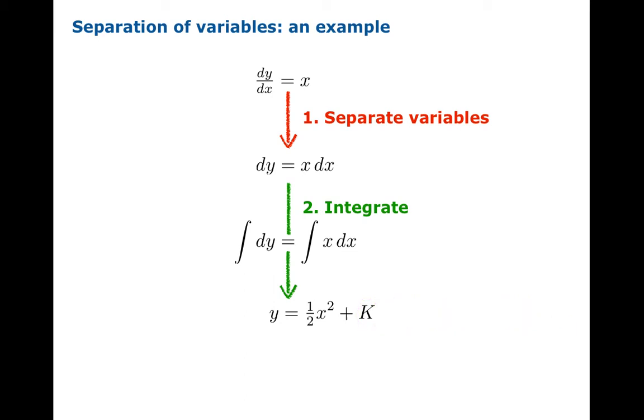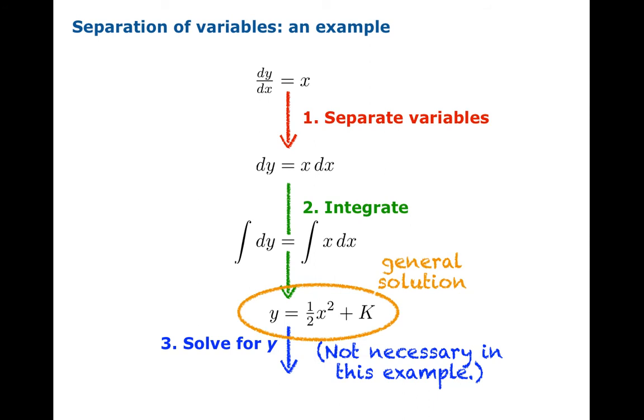Now a third step might be necessary but in this case it's not. You might have to solve the resulting equation for y to get your explicit function. In this case it's not necessary because it's already written that way. So there's our general solution to the original equation.